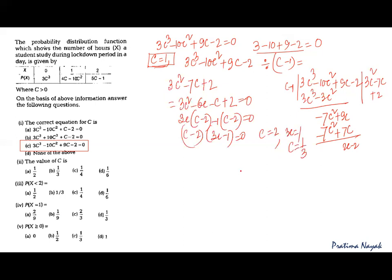Now let us check against the options. c = 1/2 is not there. c = 1/3, yes, it is there. Also, c = 2 cannot be the answer because it would make the probability greater than 1. So c = 1/3. The answer is b, c = 1/3.